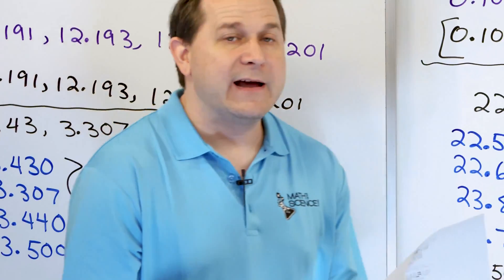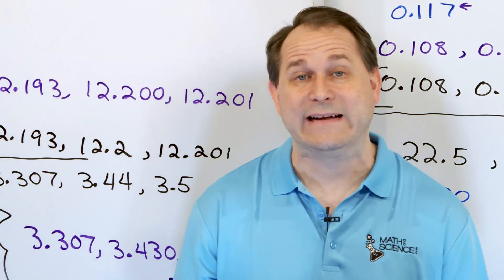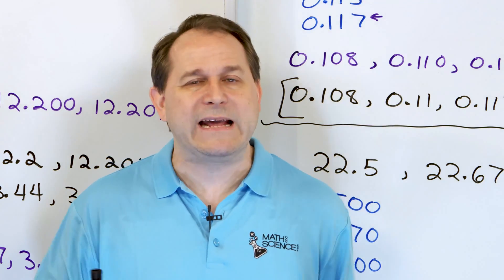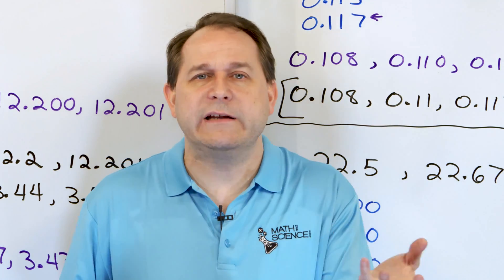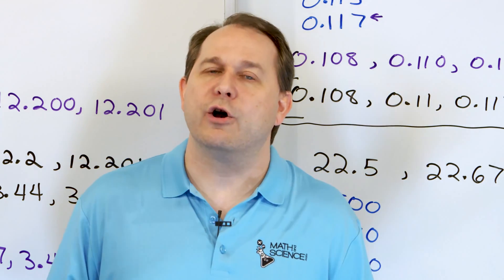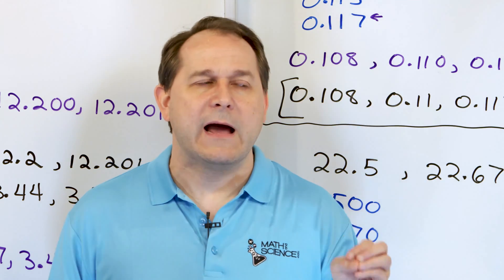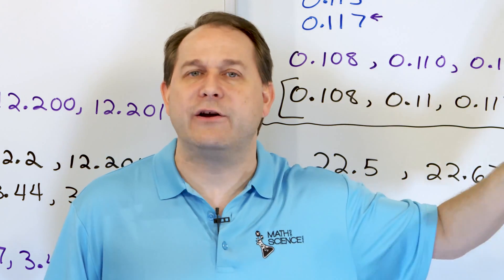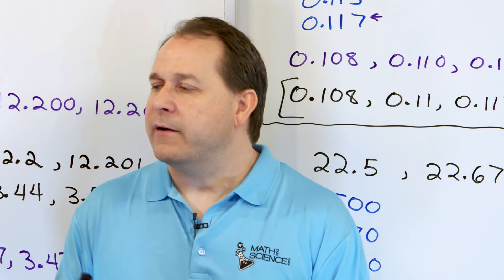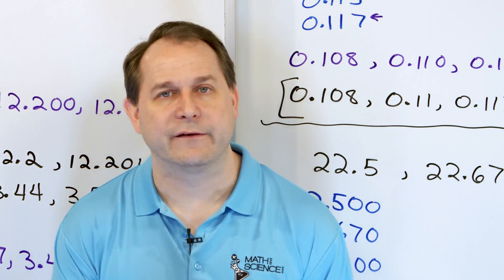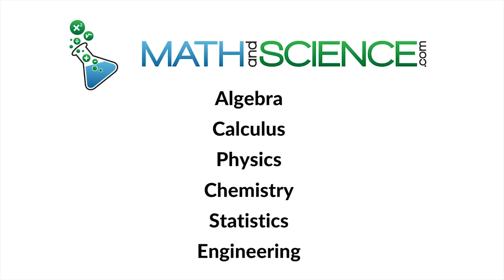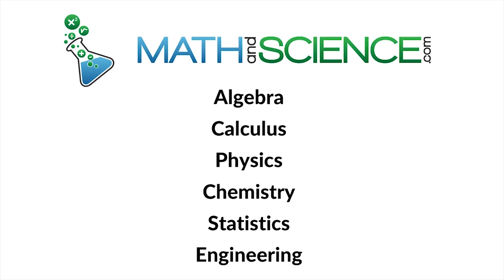Here we have learned how to order decimals from least to greatest. It's an important skill — it helps us figure out important things like money. For instance, if I give you $3.52 and somebody else has $3.05, how are you going to know who has more money? That's one reason why we're learning this. Practice these yourself, and when you feel like you're getting the right answers, follow me on to part two where we will wrap up our practice of ordering decimals. Learn anything at mathandscience.com.